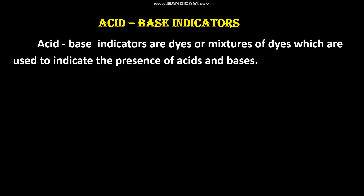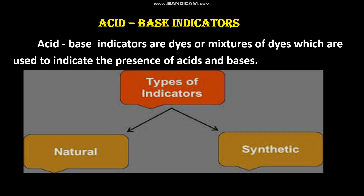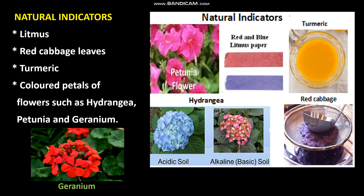We have seen that litmus paper changes its color in acid and base — this is an example of an acid-base indicator. Acid-base indicators are dyes or mixtures of dyes which are used to indicate the presence of acids and bases. These indicators are classified into two types: natural indicators and synthetic indicators.